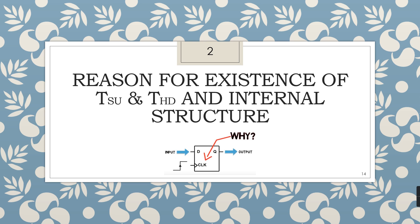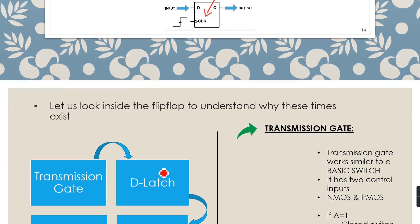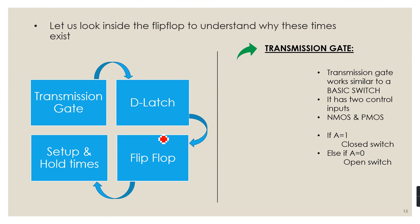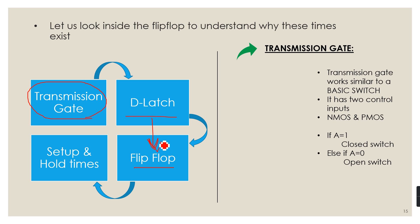So how is the flip-flop made and how is the data propagating through it from input to output? Let us look inside the flip-flop to understand why these times exist. The design flow looks like this: first we'll understand what is the transmission gate and its basic functionality, then we'll make a D latch using transmission gates and a few inverters, and after that we'll make a flip-flop using these latches. Finally, we'll understand how these delays are responsible for setup and hold times.